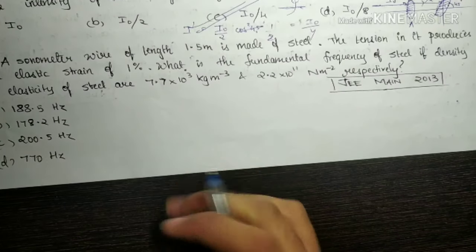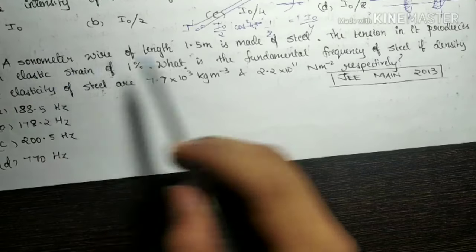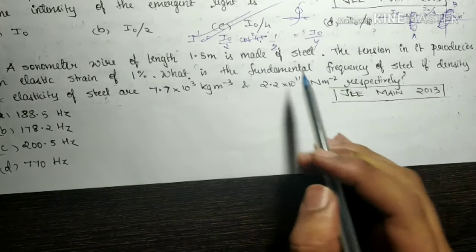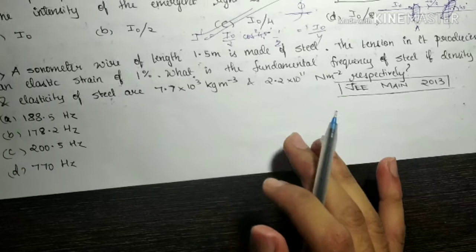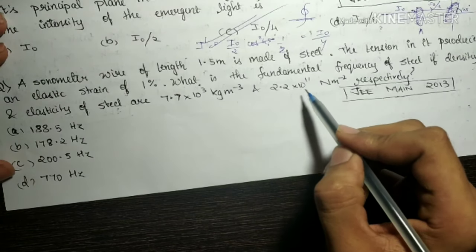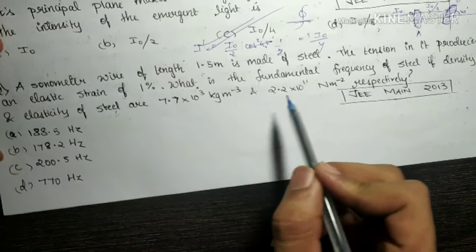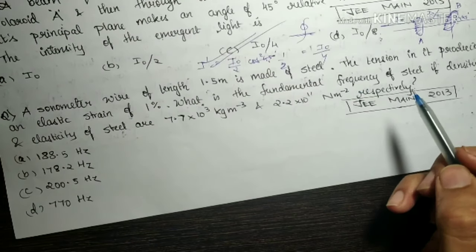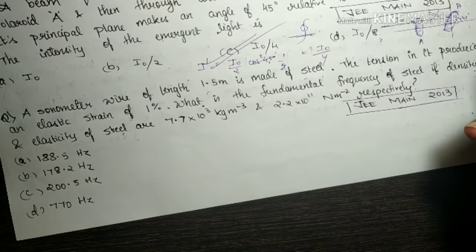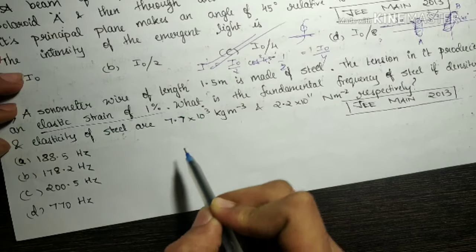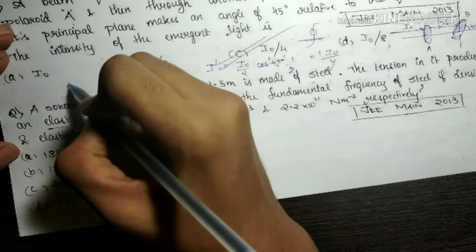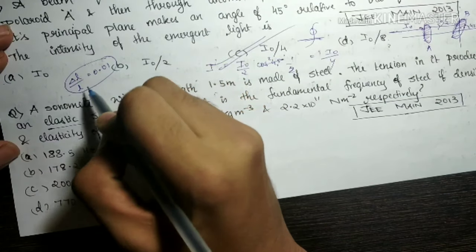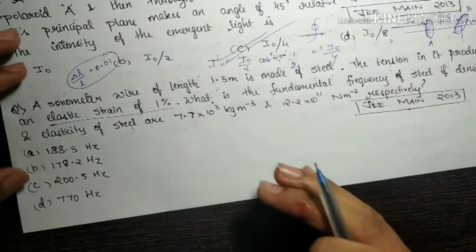The third question — a sonometer wire of length 1.5 meters is made of steel. The tension in it produces an elastic strain of 1 percent. Elastic strain is nothing but ΔL/L = 1% = 0.01. Please remember this. We have to find the fundamental frequency of this steel wire given its density and elasticity.